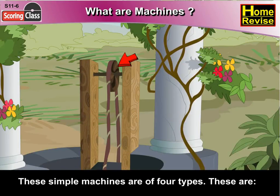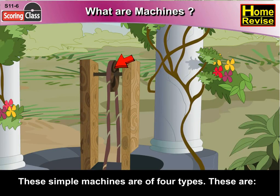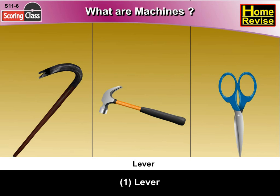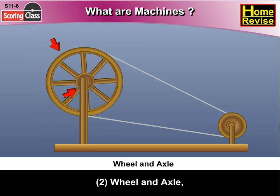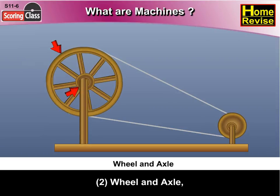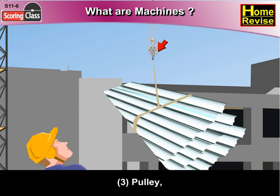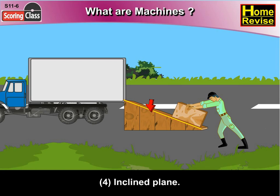These simple machines are of four types. First, lever. Second, wheel and axle. Third, pulley. And fourth, inclined plane.